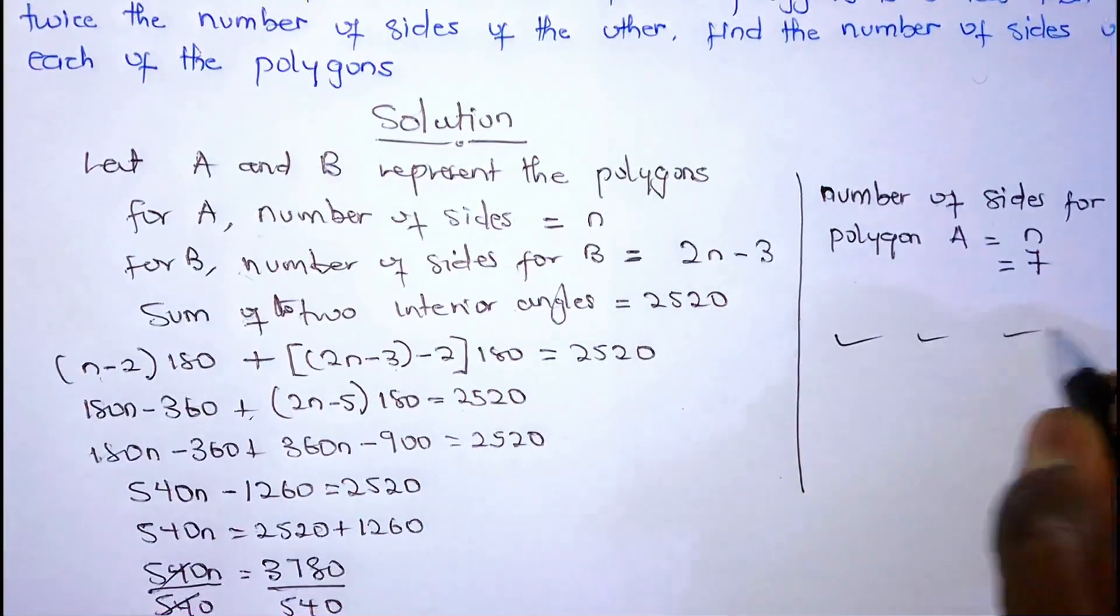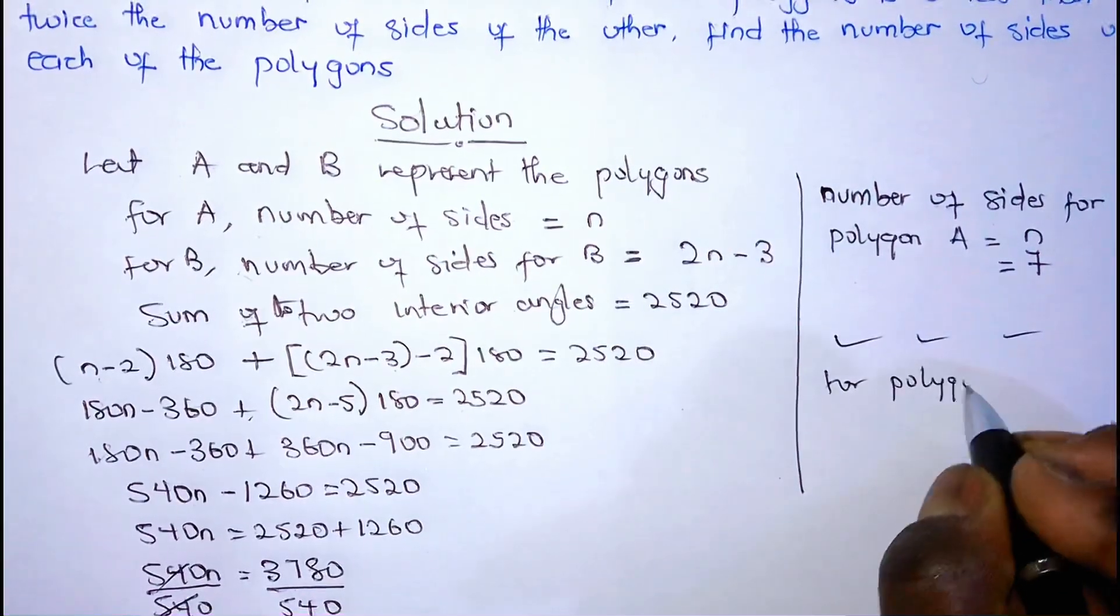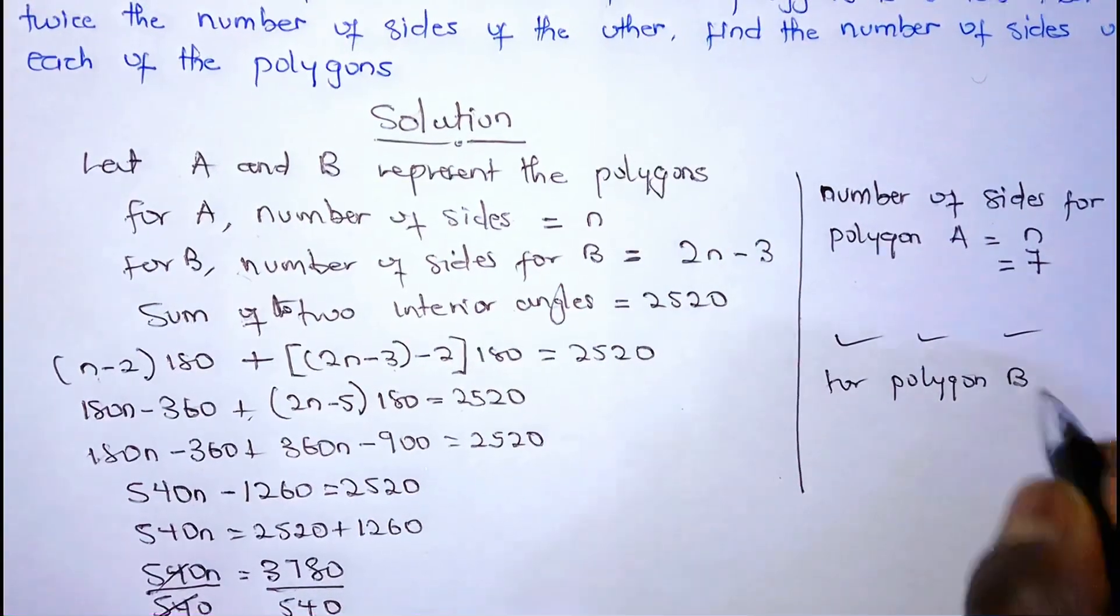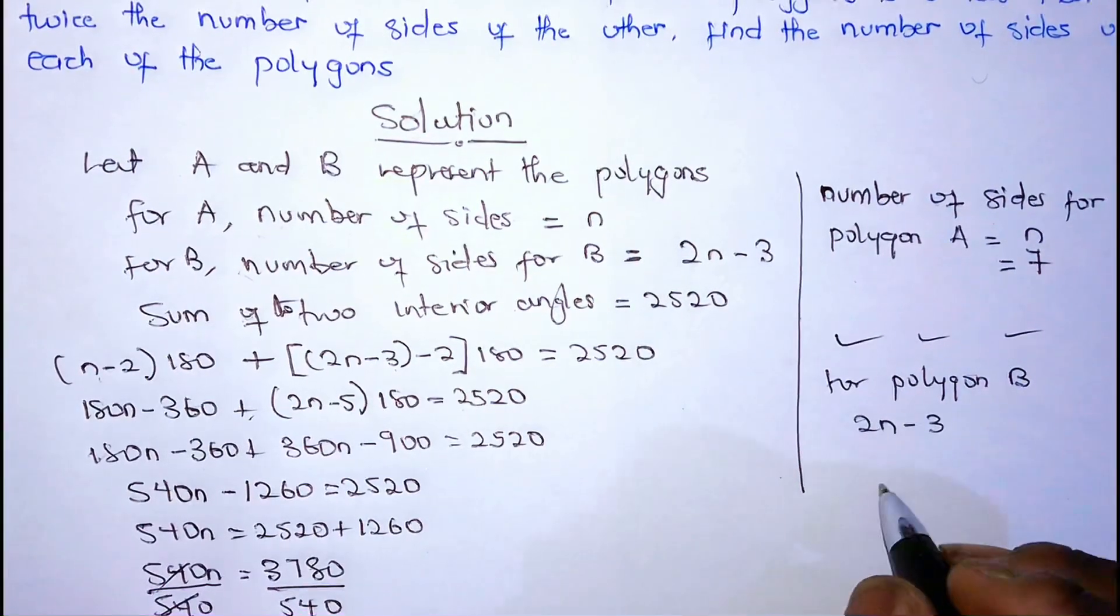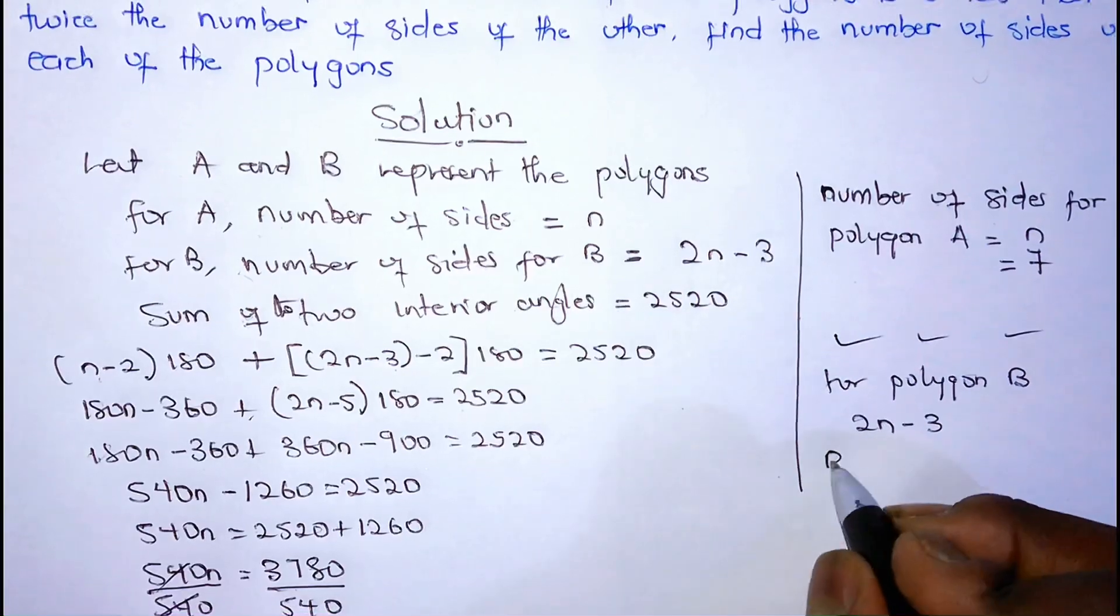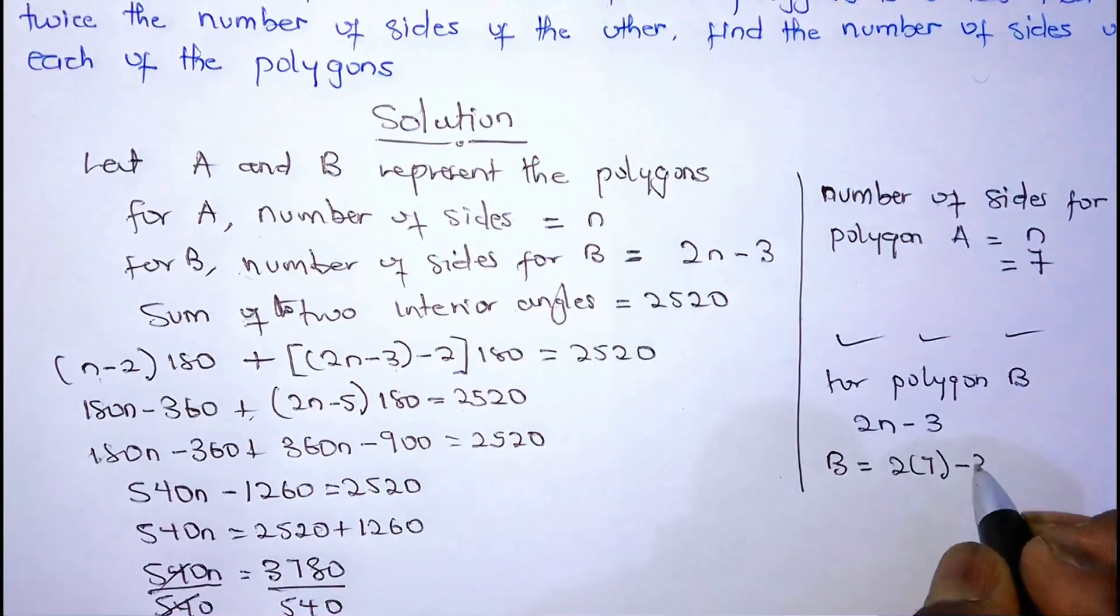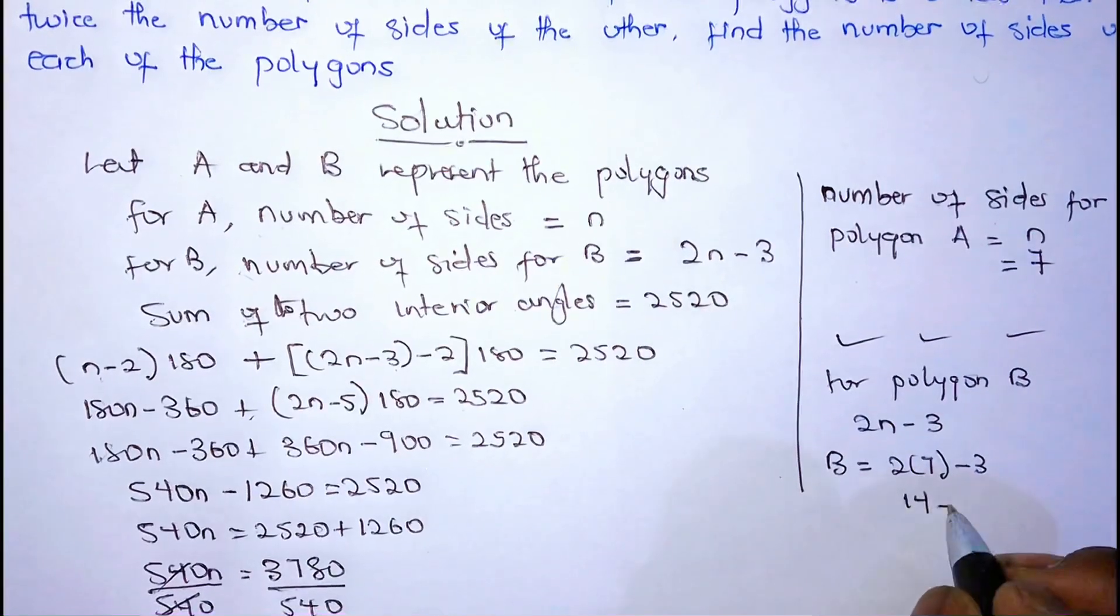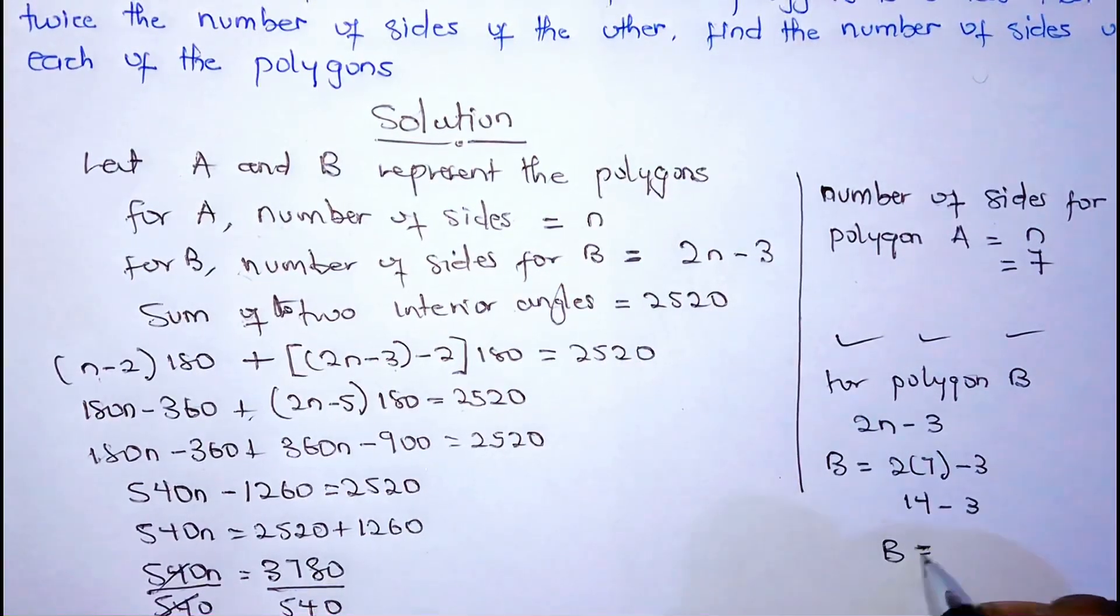Now number of sides for polygon B was given as 2N minus 3. So since N is 7, we are going to get B is equal to 2 into bracket 7 minus 3. So 14 minus 3, and the number of sides for the second polygon, which is B, is 11.